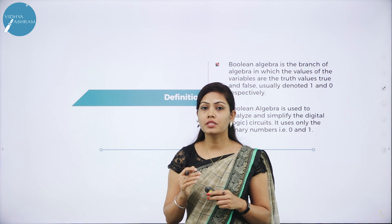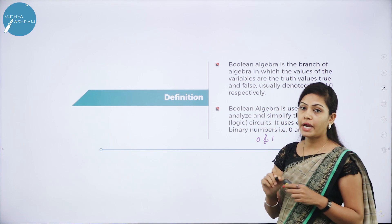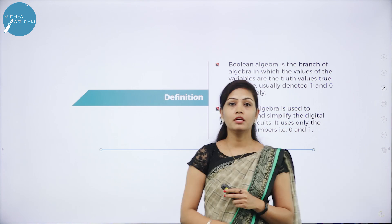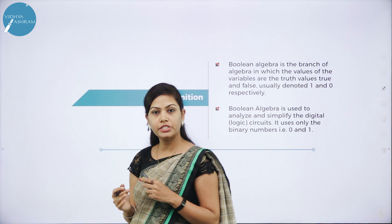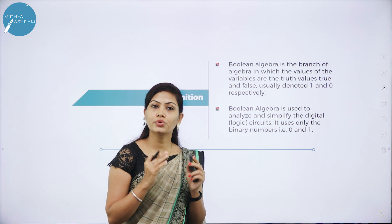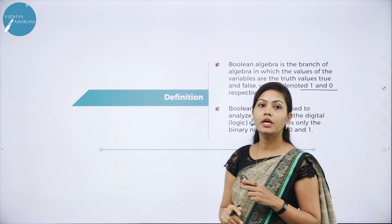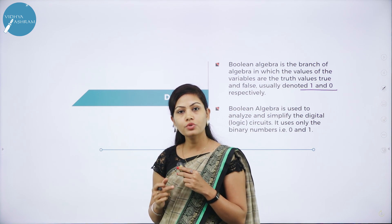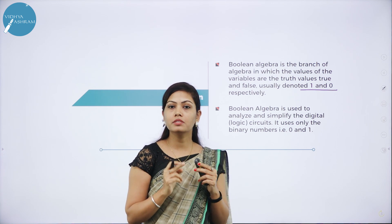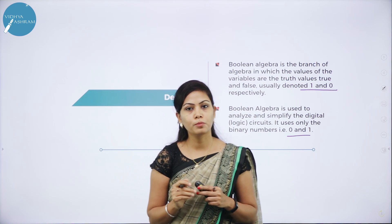Binary Number Systems are the representation of 0s and 1s. Boolean Algebra is the branch of algebra in which the values of the variables are the truth values — true and false — usually denoted by 1 and 0. Boolean Algebra is used to analyze and simplify the logic circuits. It uses only the binary numbers 0 and 1.